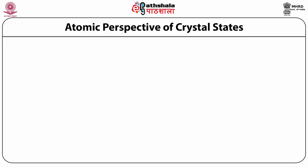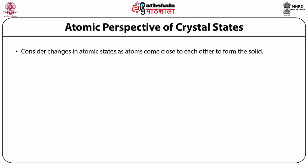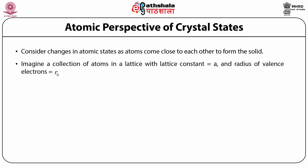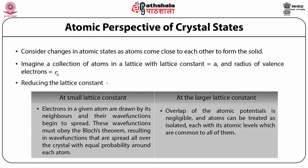Atomic perspective of crystal states. In this module we adopt a somewhat opposite perspective, starting with atomic orbitals. We consider changes in atomic states as atoms come close to each other to form a solid. We imagine a collection of atoms in a lattice with lattice constant A much larger than R₀, where R₀ is the radius of the valence electron, and consider what happens as the lattice constant is reduced. At large lattice constant the overlap of atomic potentials is negligible and atoms can be treated as isolated, each with its own atomic levels.